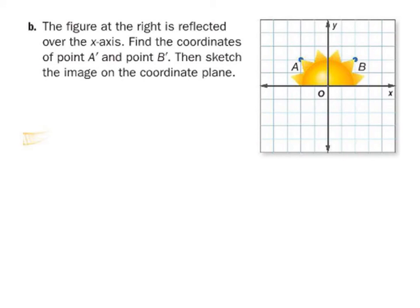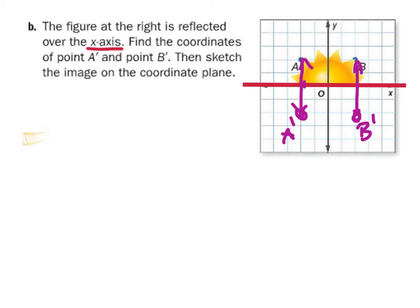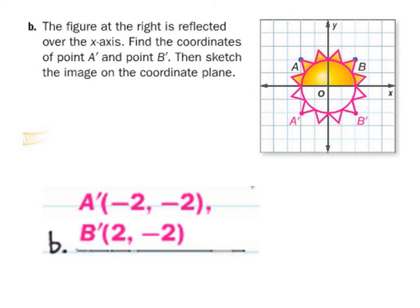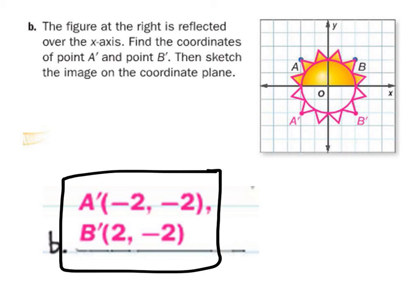In this example, we're just reflecting over the x-axis. We can see that A is 2 away from the x-axis, so we'll go down 2 to get A prime. B as well is 2 away, so we'll go 2 down to get B prime. All we have to do with the rest is just draw it. I've drawn it in and written both points down.